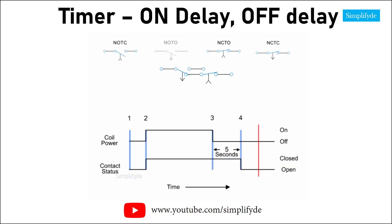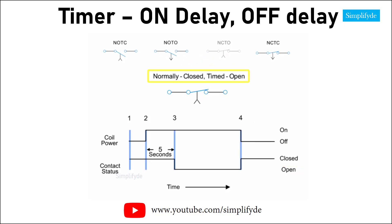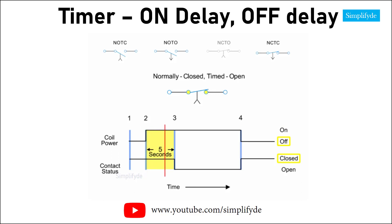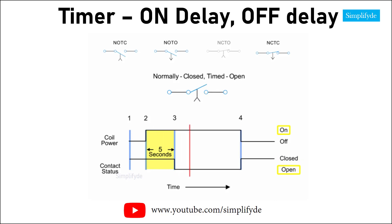Next, we have the normally closed timed open contact. This type of contact is normally closed when the coil is unpowered or de-energized. The contact is opened with the application of power to the relay coil, but only after the coil has been continuously powered for the specified amount of time — in this case, five seconds. Thus, the contacts open five seconds after the coil is energized, and close immediately when the coil is de-energized.